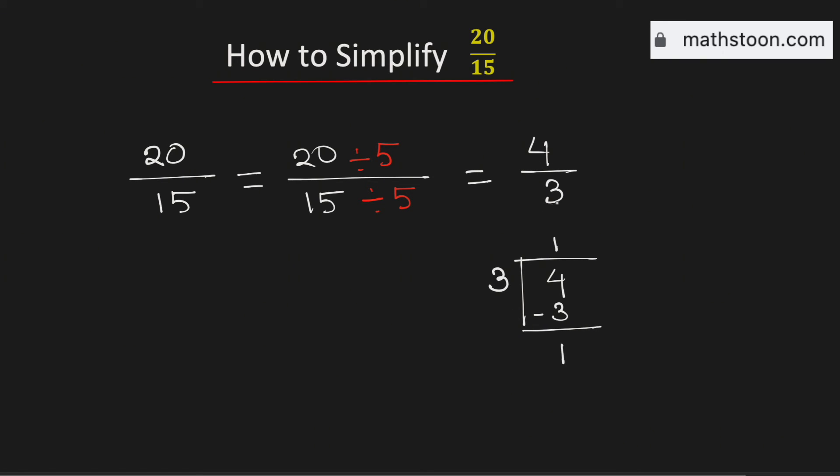Therefore 4 over 3 as a mixed number is equal to 1 and 1 over 3. Therefore 20 over 15 simplified as a mixed number is equal to 1 and 1 third. This is our final answer.